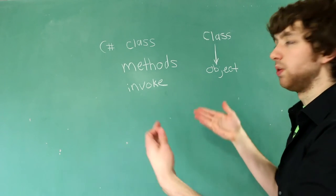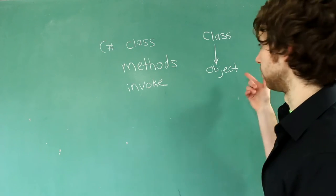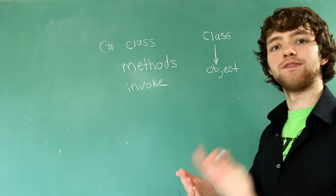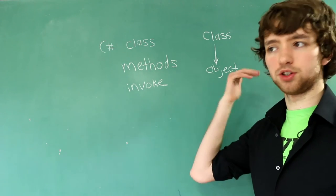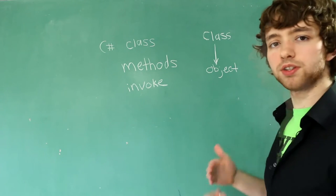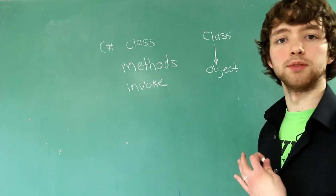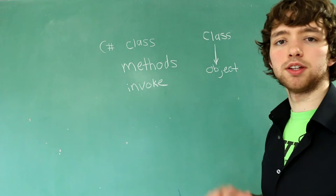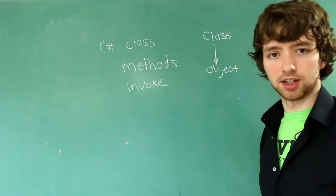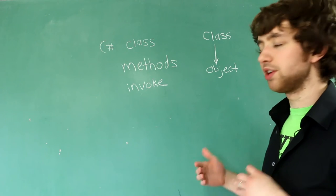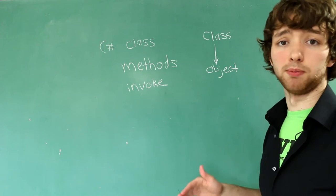We can instantiate that class into an object, which would be a specific person, such as Caleb. Then Caleb could do those methods, such as walk, talk, or eat. This is the basics of object-oriented programming. This series really isn't about OOP, but I'm just trying to give you the basics in case you don't know much about it. In general, it's pretty easy, so you don't have to worry about it.